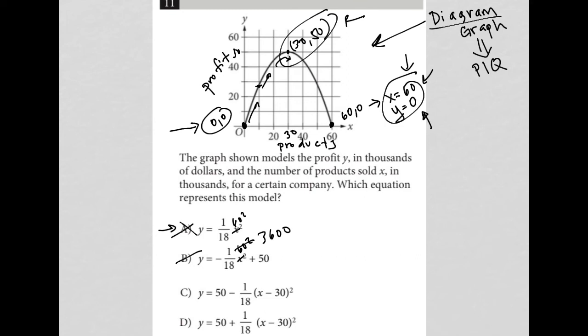C, if I plugged in 60 here, I get 60 minus 30, which is 30. 30 squared is 900. 900 divided by negative 1/18th is negative 50. Okay. And then 50 minus 50 is zero. So C works. And then D looks just like C, except we have a positive 1/18th, which means we would end up with a 50 plus 50 for choice C, for choice D. Therefore, D doesn't work. So C must be the correct answer.